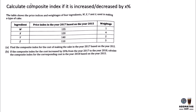First, find the composite index for 2017 based on 2015. We use 135 times 1, plus 120 times 4, plus 140 times 2, plus 110 times 3. Then divide by the total weights: 1 plus 4 plus 2 plus 3 equals 10, so we divide by 10.